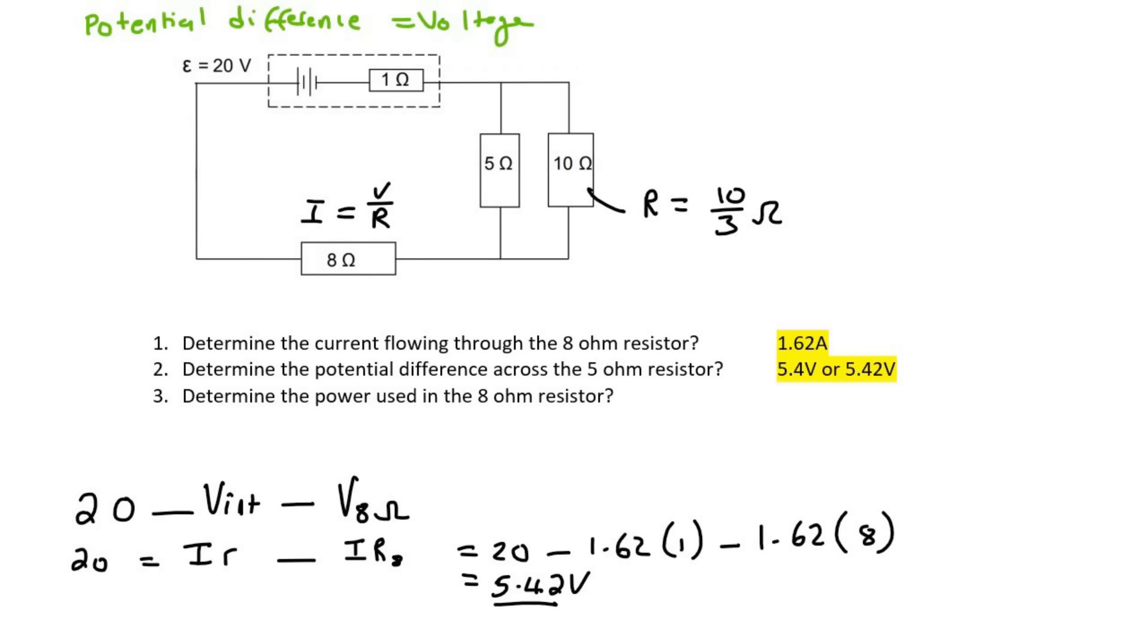And then our last question is, determine the power used in the 8 ohm resistor. Now, power is equal to voltage multiplied by current. Yeah, Kevin, but my teacher showed us that there's other formulas as well. Yes, I'm fully aware of that, but I just want to show you something. If we use the formula I equals V over R, I want you to then take that V over R and put it in the place of I, and let's see what we get. So that's going to be P equals V, and then we're going to replace the I with V over R. And that's going to give you P equals V squared over R. Some of you are like, oh, yeah, I saw that one in class.